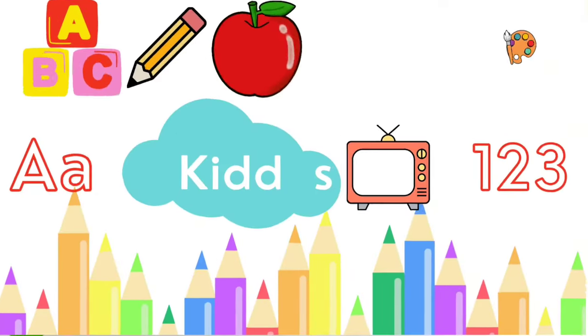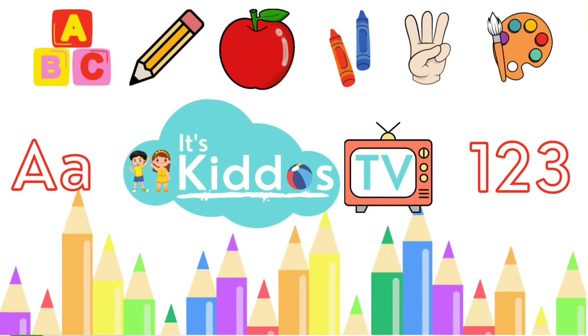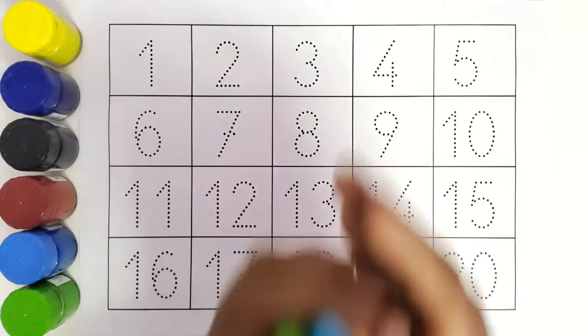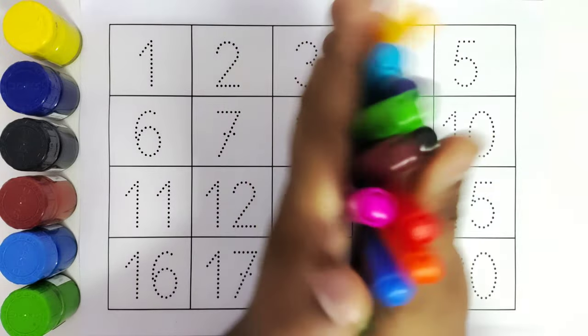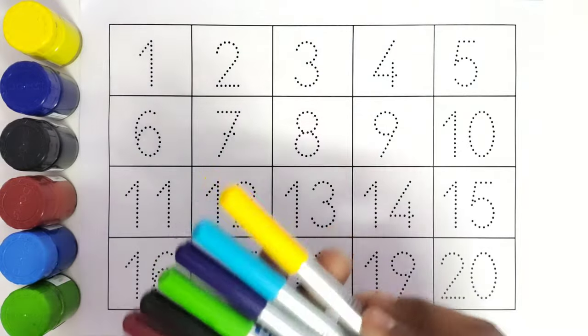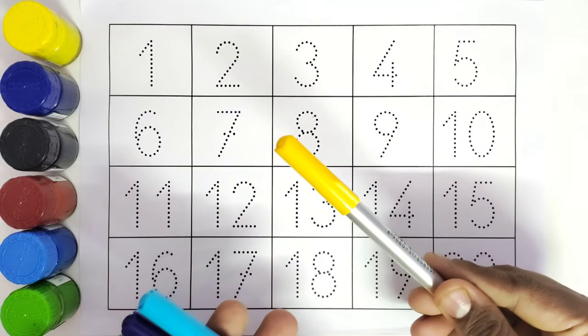Hello kids, welcome to Kiddos TV. Today we are going to trace all these numbers from 1 to 20, so let us get started with the color names. This is yellow color.